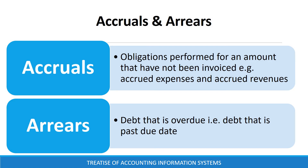Accruals is the amount of money for an obligation that has been performed but has not been invoiced — for instance, unbilled rent expenses. On the other hand, arrears is the debt that is long overdue — that is, a debt that is past its due date.